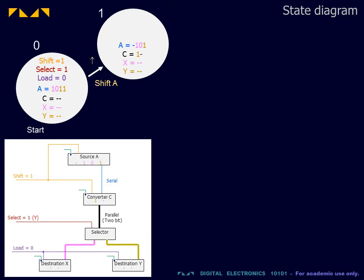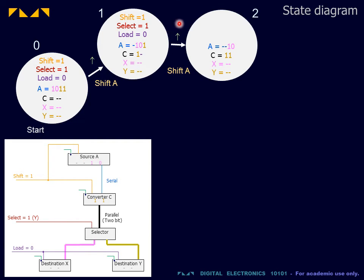At the next clock pulse, the source A will shift its rightmost bit into the data converter C. The control inputs will remain the same for the next clock trigger. After the second clock trigger, the second shift has occurred. The bits destined for Y have now been shifted into the data converter.